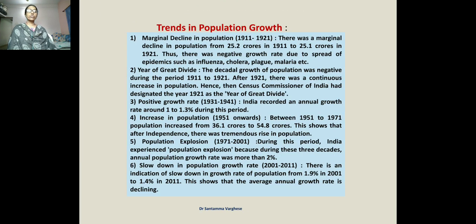Now, trends in population growth — what changes can we see, explained point-wise. First point: marginal decline in population. From 1911 to 1921 there was a marginal decline in population, from 25.2 crores in 1911 to 25.1 crore in 1921. This shows a negative growth rate.